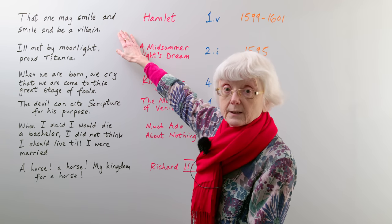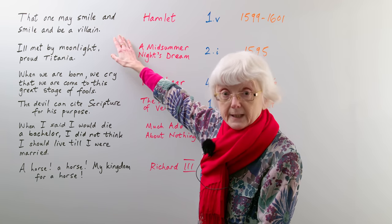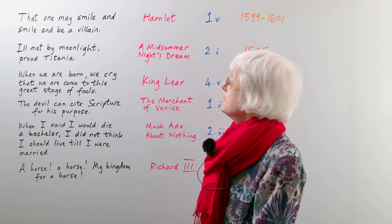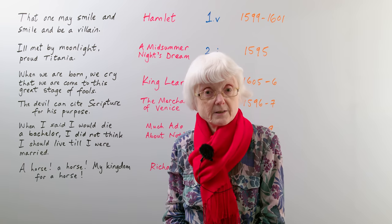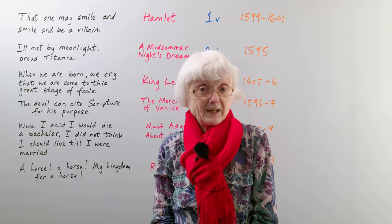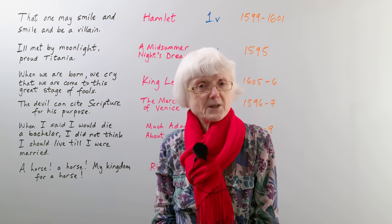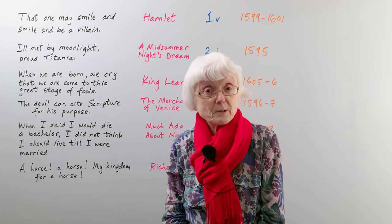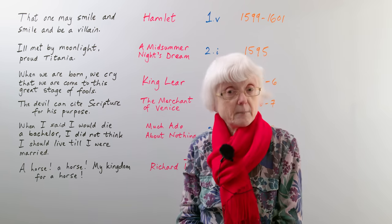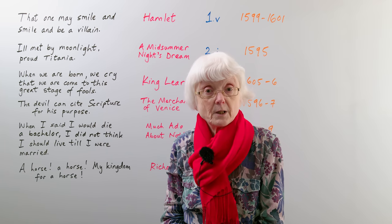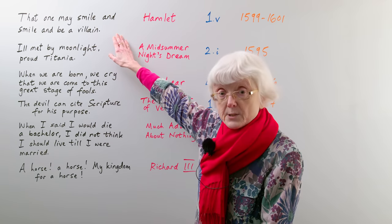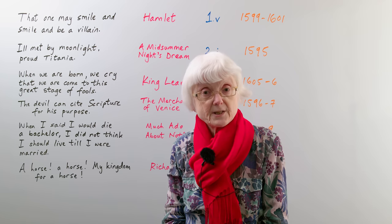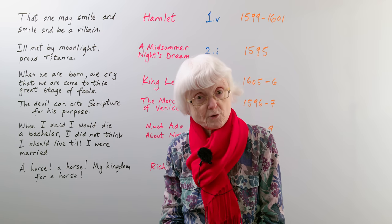The first quotation is: 'One may smile and smile and be a villain.' A villain is a bad person. So if somebody who's a bad person smiles and they're really nice to you, sometimes it may not be true — sometimes they may be a deceptive person. Hamlet himself says this about one of the other characters who is a dishonest character in the play, because it's a tragedy.